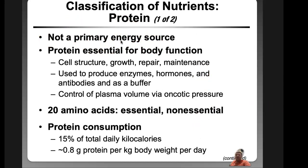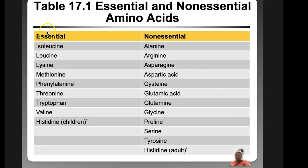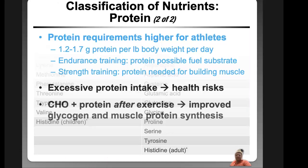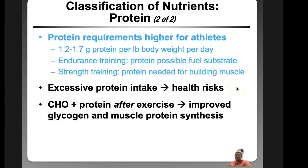Protein is not a primary energy source — it's more of a recovery nutrient. It is essential for growth, repair, and maintenance, which is why we say to eat a lot of protein when working out. There are 20 essential amino acids that must be consumed. One amino acid is essential for children but not adults — it's not synthesized in young infants. Excessive protein intake can have health risks, including kidney problems. Carbohydrate-protein combinations after exercise are good for muscle recovery.